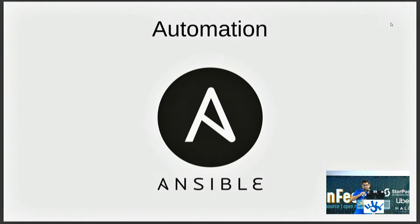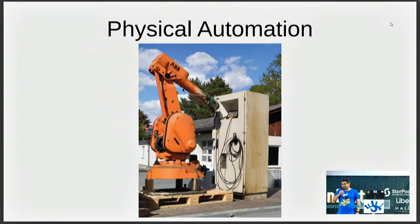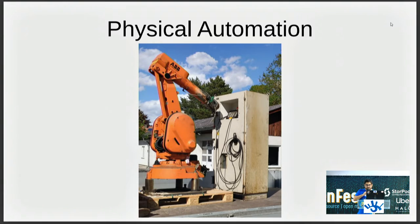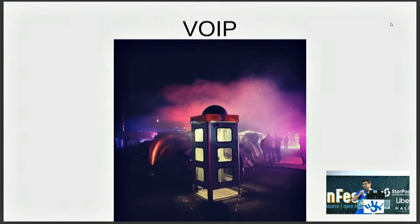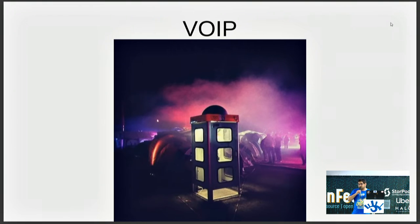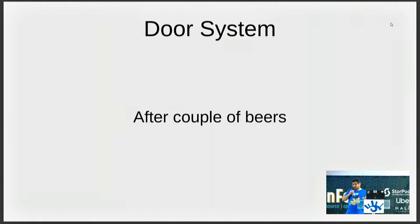We also have physical automation. We have a robot arm at a colleague's place — he's working on it, and maybe we'll do some physical fun stuff with it. Additionally, we have a phone booth as our logo, and also a physical one that runs with a VoIP phone inside. You can use it to call people and even ring it. We bring it to camps with us. We also have a door system — it's not quite open source currently, but you can ask me after a couple of beers.